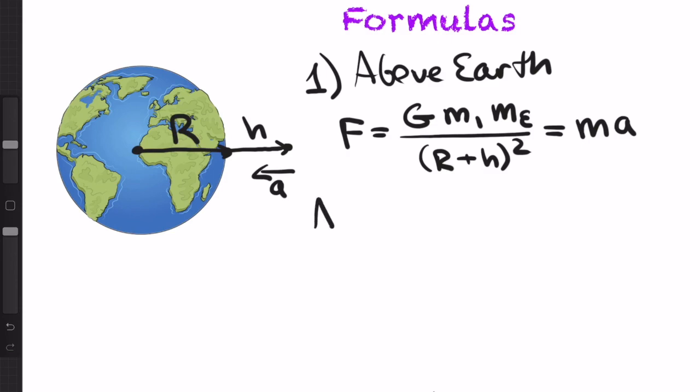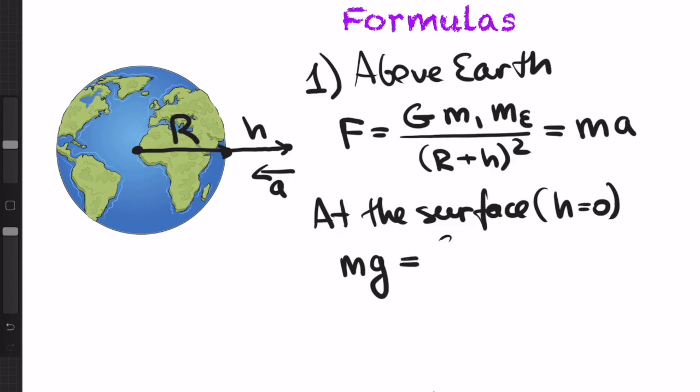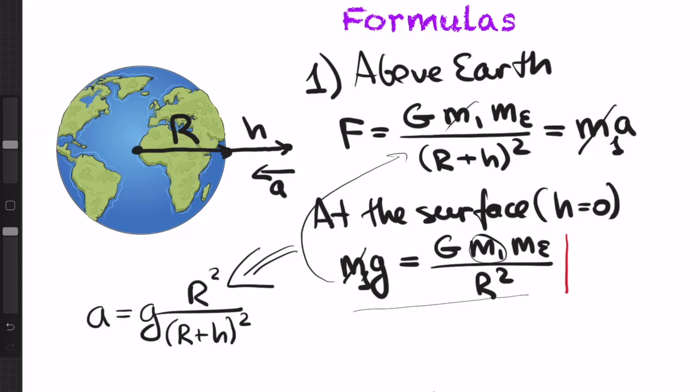But let us simplify this expression a bit. We know that at the surface, where h is equal to zero, we denote our acceleration by g, which is approximately 9.8, and so it is equal to G times m1, m Earth over r squared. And m1 is just our mass. So if you combine this formula and this formula, and rewrite a in terms of g, this is the expression that you get. And this is what we are going to remember in our stage 1.